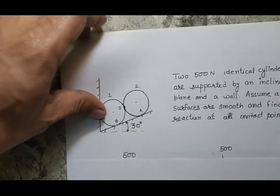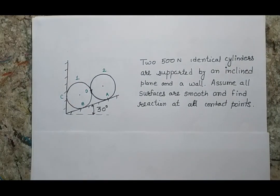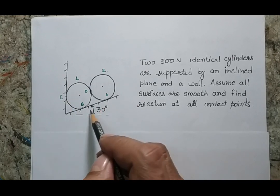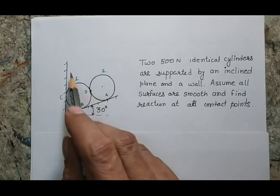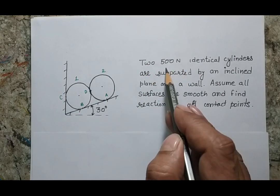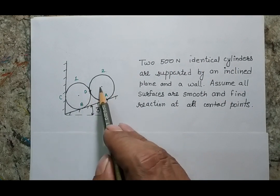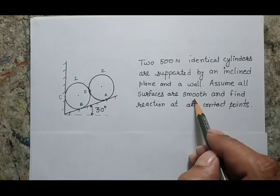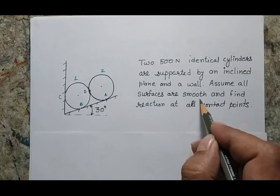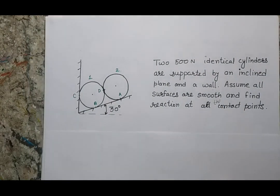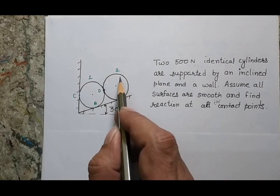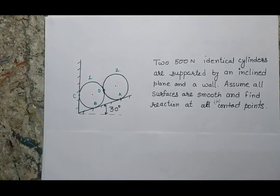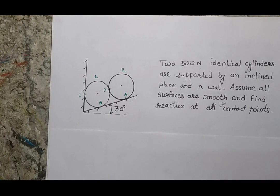The next problem involves two identical cylinders placed at the corner of two walls — one wall is inclined and one is vertical. Two 500 newton identical cylinders having the same radius and weight are supported by the inclined plane and a wall. All surfaces are smooth, meaning no friction. We need to find the reaction at all contact points. Contact points are: point A for cylinder 2 with the inclined surface, and points B, C, and D.